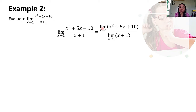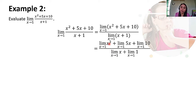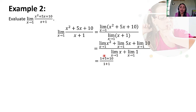Using the addition theorem, we further separate: limit of X squared as X approaches 1 plus limit of 5X as X approaches 1 plus limit of 10 as X approaches 1, all over limit of X as X approaches 1 plus limit of 1 as X approaches 1. Simplifying: 1 squared equals 1, plus 5 times 1 equals 5, plus 10, all over 1 plus 1. This gives 1 plus 5 plus 10 over 1 plus 1, which is 16 over 2, equal to 8.